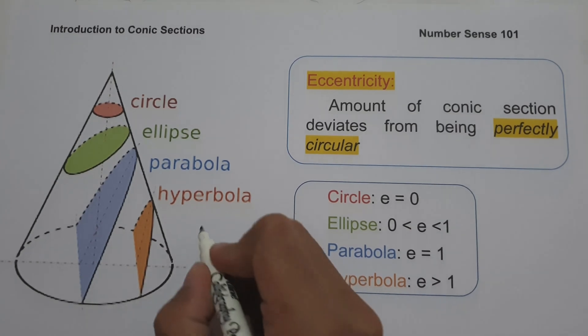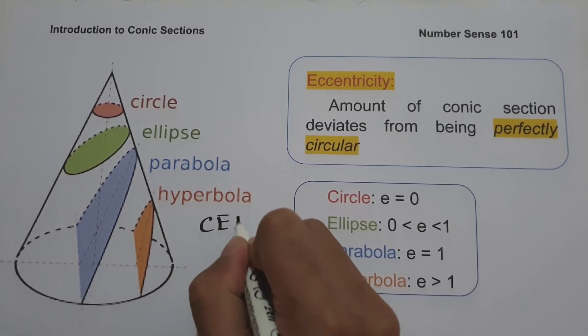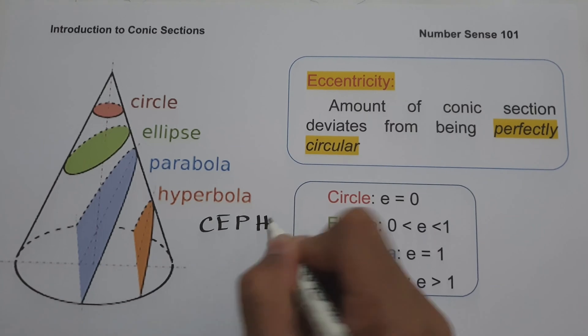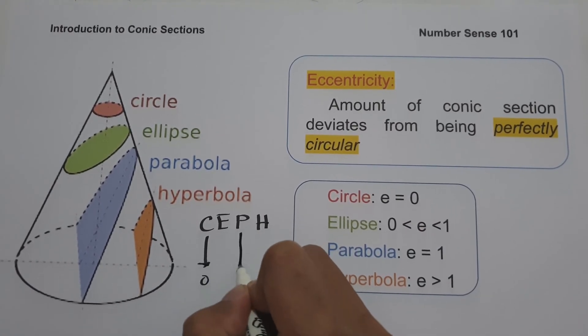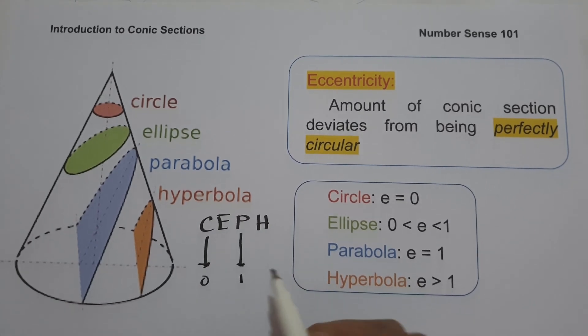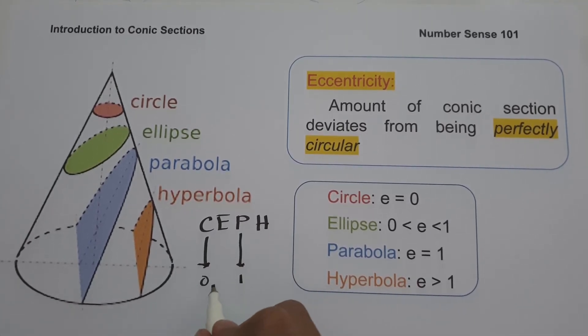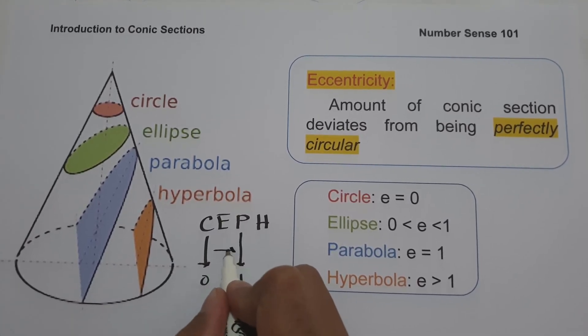The fastest way to remember this is by using the mnemonic CEPH. C for circle, which has eccentricity zero. P for parabola, which is one. And E for ellipse, which is between zero and one.